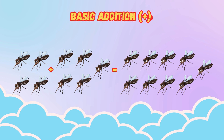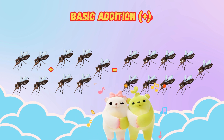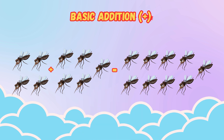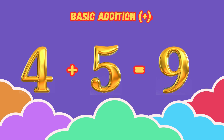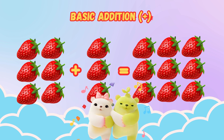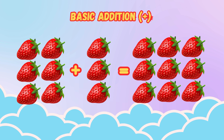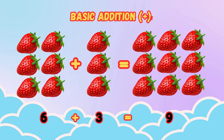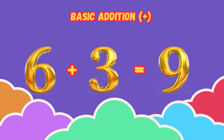Four mosquitoes plus five mosquitoes is equal to nine mosquitoes. It means four plus five is equal to nine. Six strawberries plus three strawberries is equal to nine strawberries. It means six plus three is equal to nine.